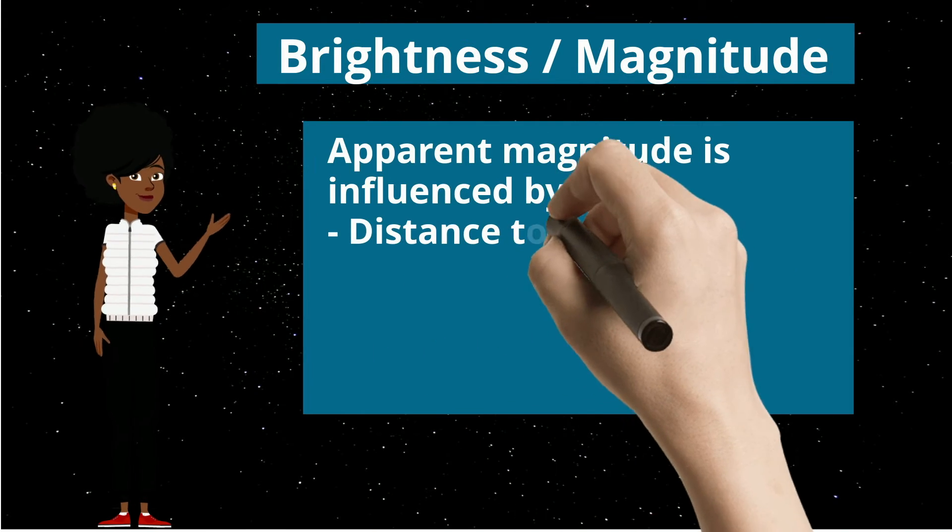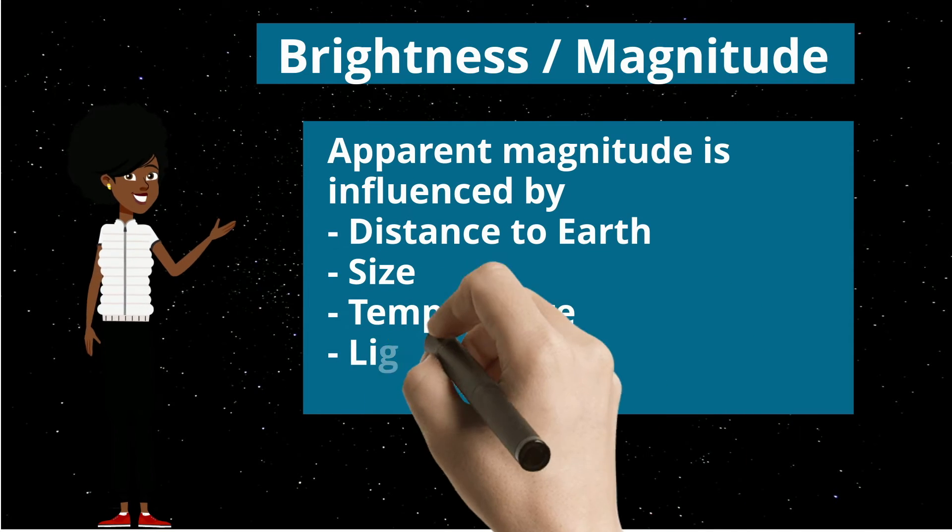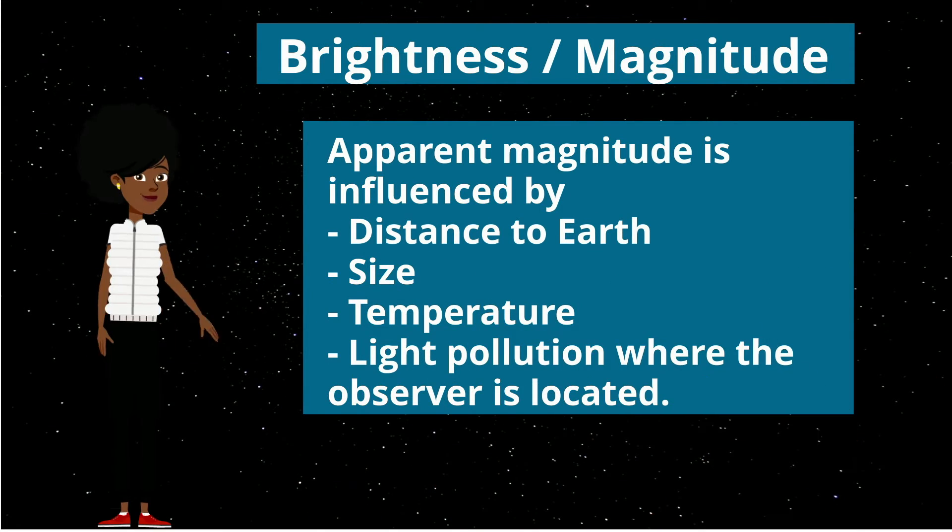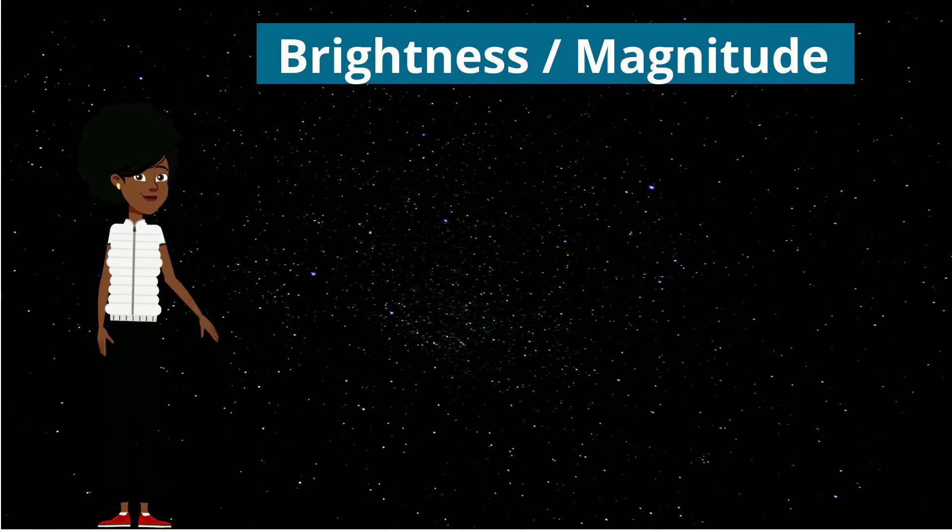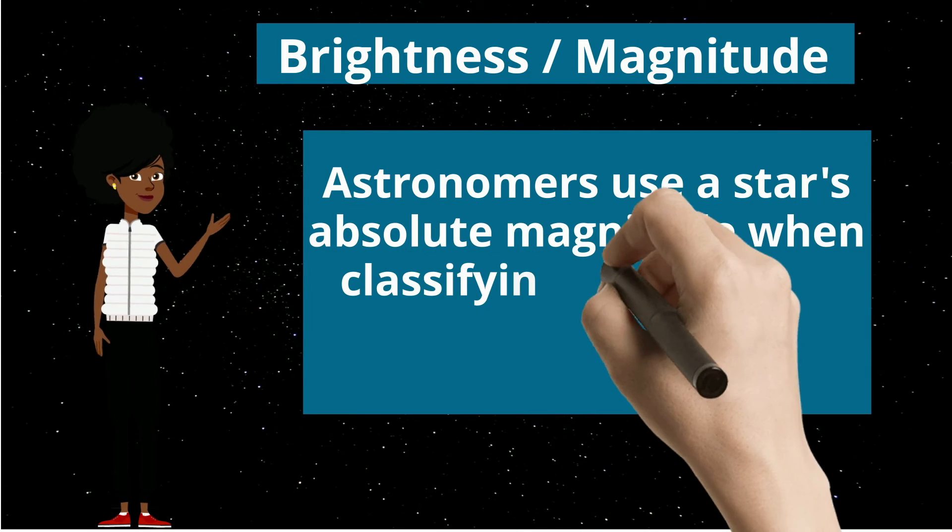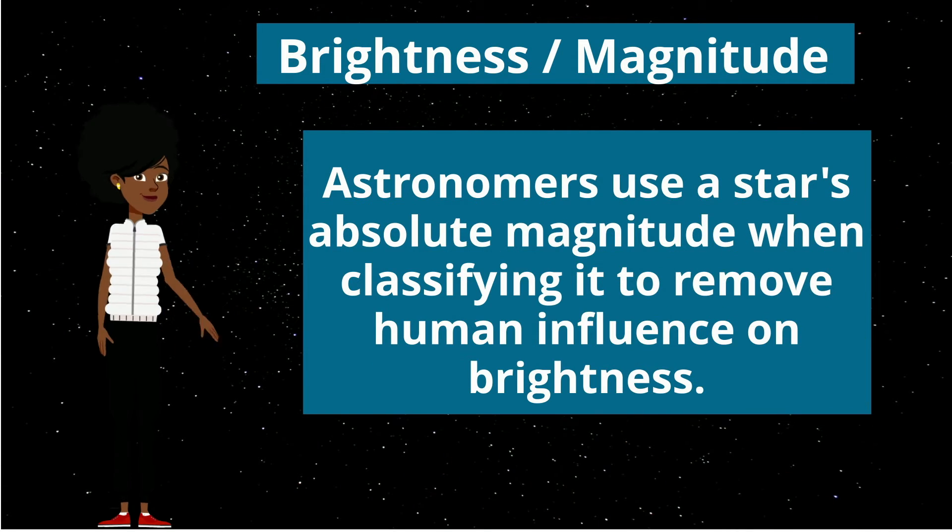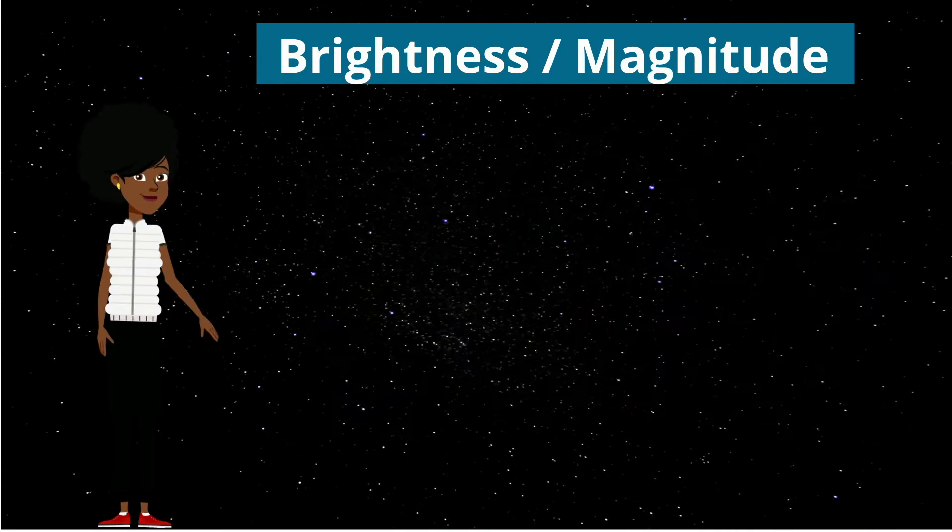Apparent magnitude is influenced by the distance to Earth, size, temperature, light pollution where the observer is located. Astronomers use a star's absolute magnitude when classifying it to remove human influence on the brightness.